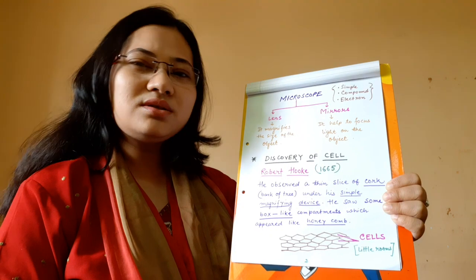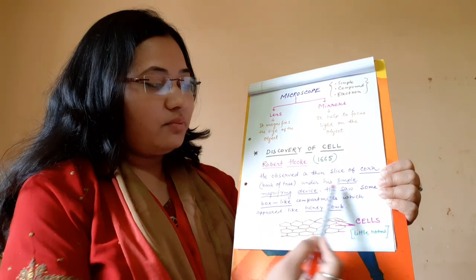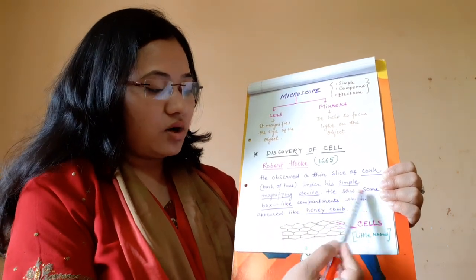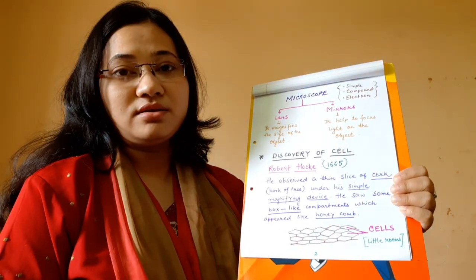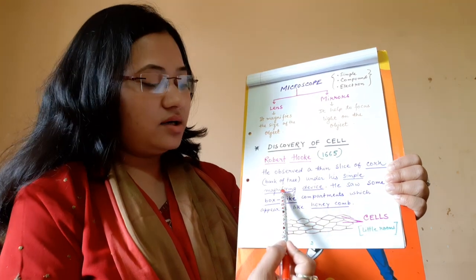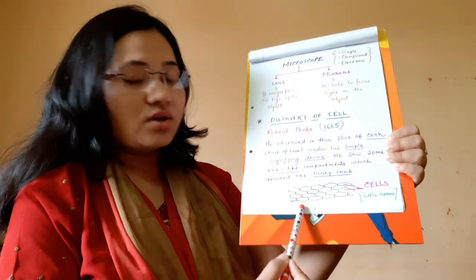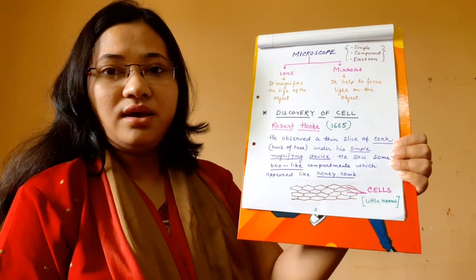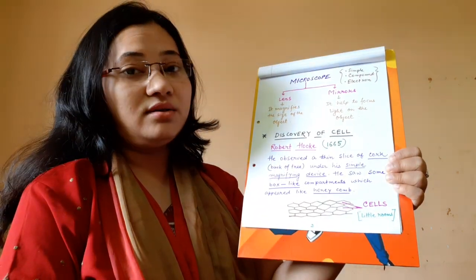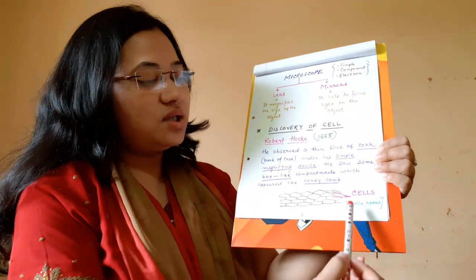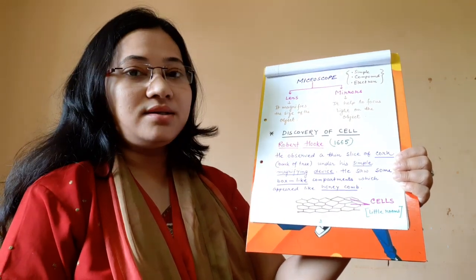Under his primitive microscope, Robert Hooke saw some box-like compartments that appeared like honeycomb structures. He named them 'cells' because the term comes from the Latin word 'cellula,' meaning 'little rooms.' He could see only empty spaces, so he named these compartments cells.